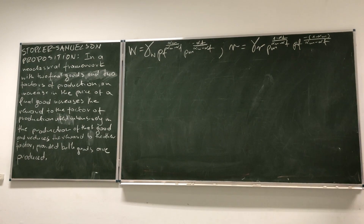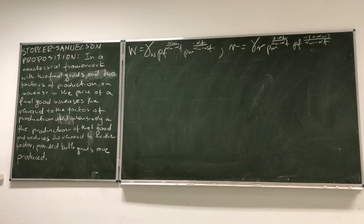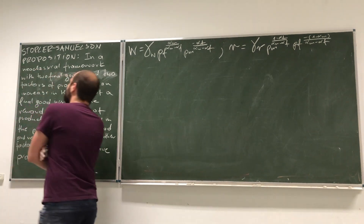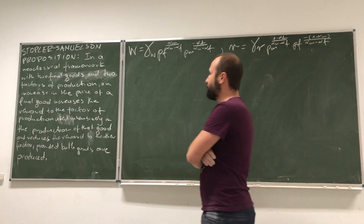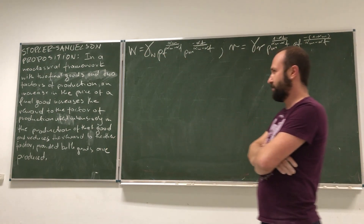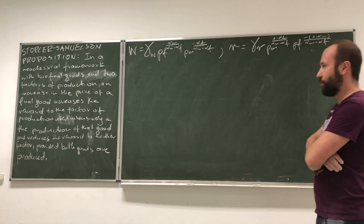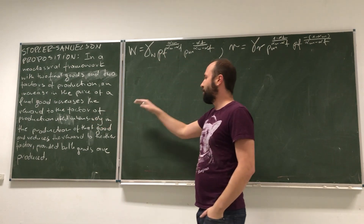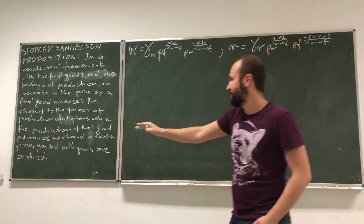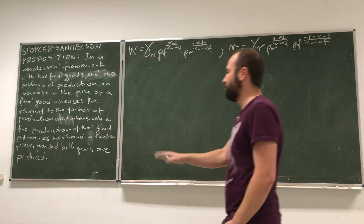Look, now we are finally ready to establish the Stolper-Samuelson proposition. Let me first read to you what this proposition states. In a neoclassical framework with two final goods and two factors of production, an increase in the price of a final good increases the reward to the factor of production used intensively in the production of that good and reduces the reward to the other factor, provided both goods are produced.